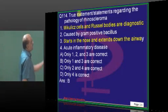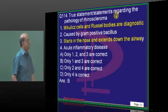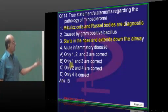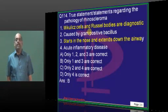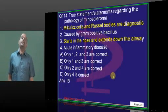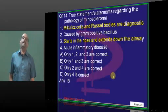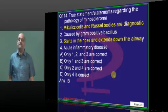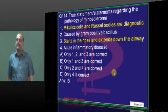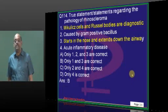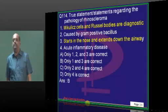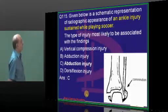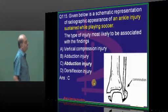Mikulicz's original bodies as in rhinoscleroma are caused by Klebsiella rhinoscleromatis. Klebsiella is gram-negative — that is what needs to be remembered.